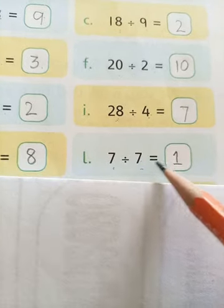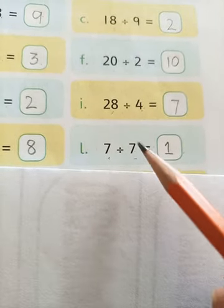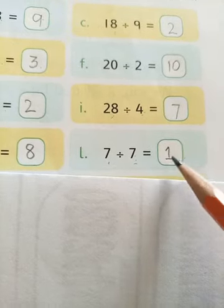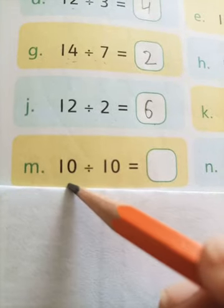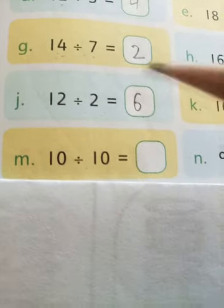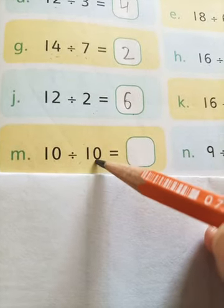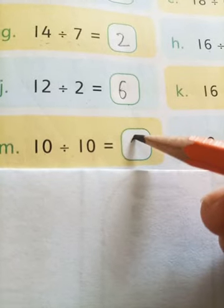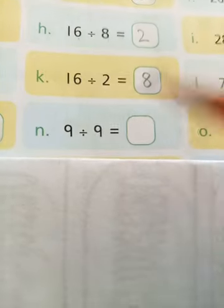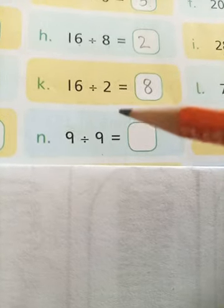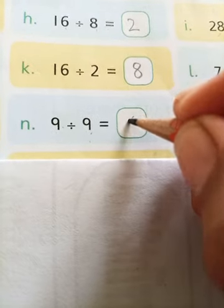Remember one thing, students: if a number divides on itself, then the answer is always 1. Next is 10 divided by 10. As we discussed, when a number divides on itself, our answer is 1. We can write 1 here. The next number is the same: 9 divided by 9. When 9 divides on the number 9, the answer will be 1.